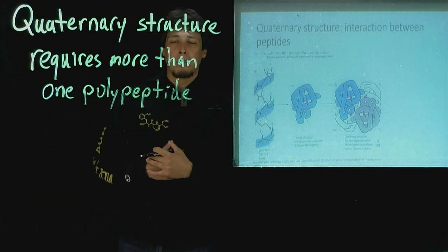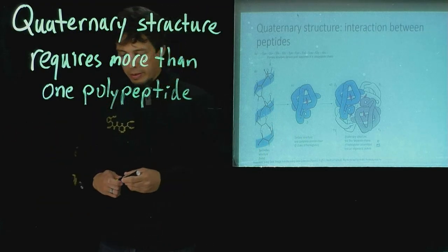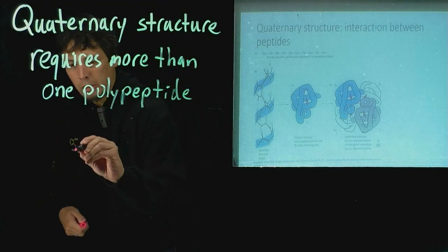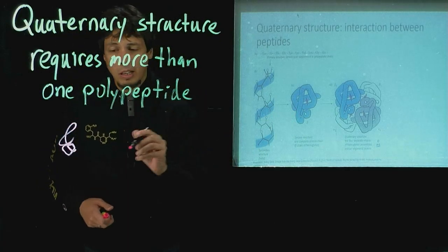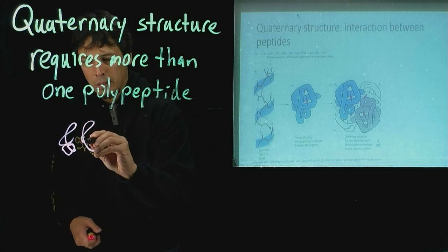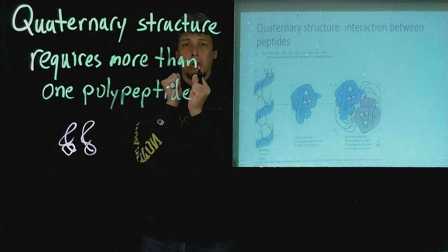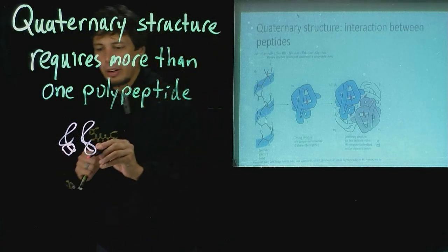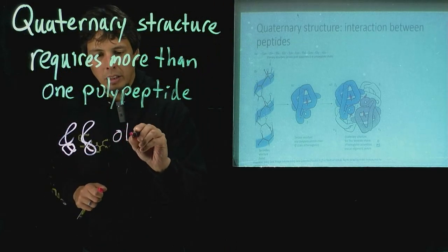For instance, if we have two polypeptides that have the exact same amino acid sequence and form a tertiary structure, you can have a second polypeptide with the exact same amino acid sequence and the same tertiary structure. If they interact with each other and are required to form one protein, the general name for this is an oligomer.